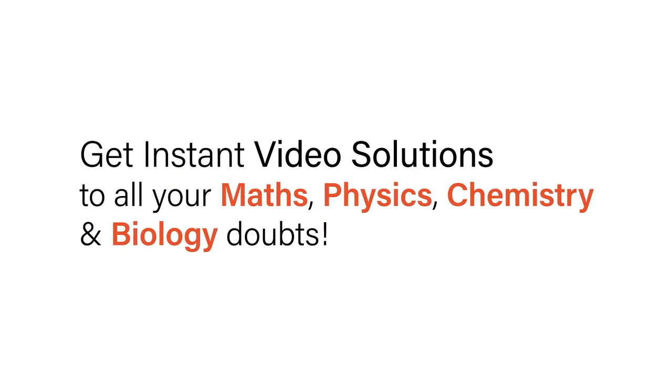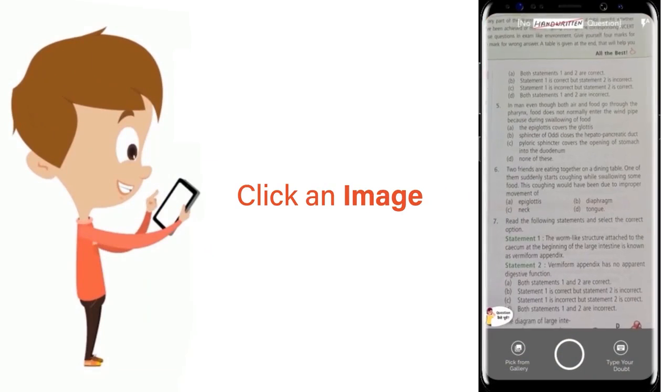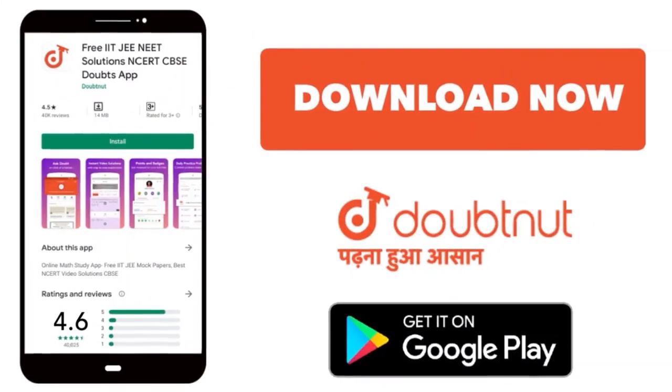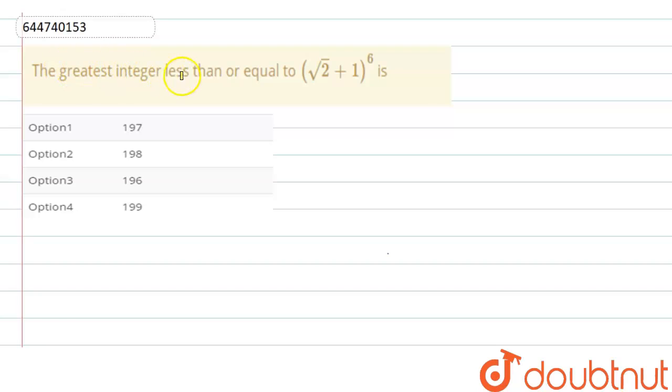With Doubtnet, get instant video solutions to all your maths, physics, chemistry, and biology doubts. Just click the image of the question, crop the question, and get instant video solution. Download Doubtnet app today. The greatest integer less than or equal to √2 + 1 to the power 6 is...